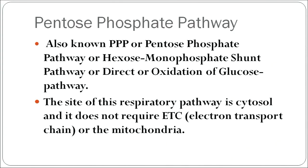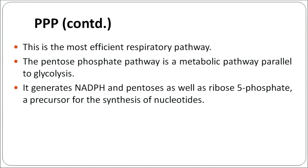Yet another pathway of respiration is the pentose phosphate pathway, or triple P, also known as the hexose monophosphate shunt pathway or direct oxidation of glucose pathway. In this pathway, the site of the respiratory pathway is the cytosol. It does not require any electron transport chain or mitochondria. This is the most efficient respiratory pathway. It almost parallels glycolysis and generates NADPH and pentoses, as well as ribose-5-phosphate, which is a precursor for the synthesis of nucleotides.